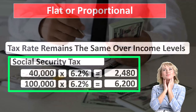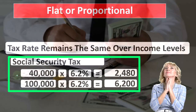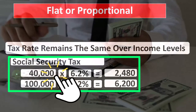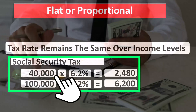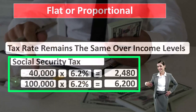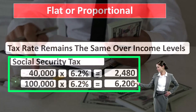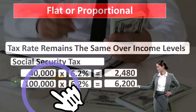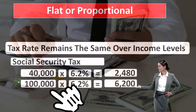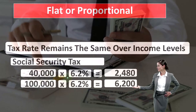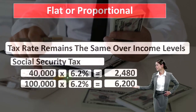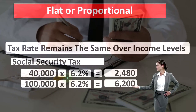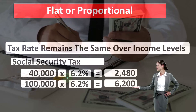The flat tax makes forecasting straightforward. For example, if you're currently earning $40,000 and expect to earn $100,000 next year, calculating how much tax you'll owe is simple because the rate stays the same — it's an easy calculation to make.